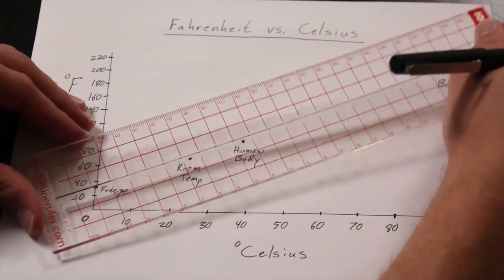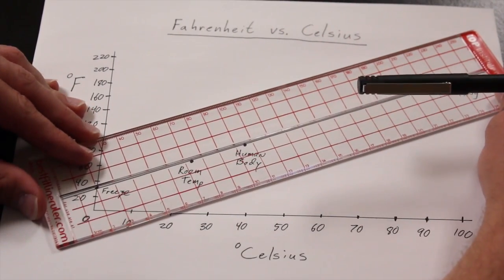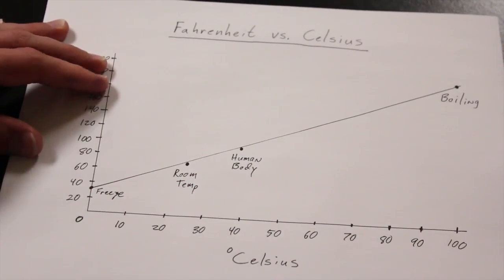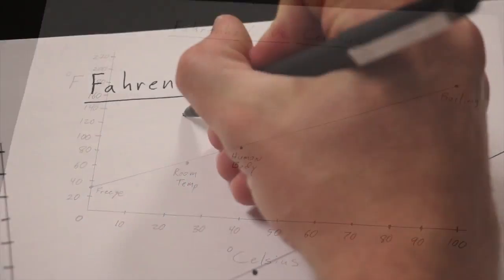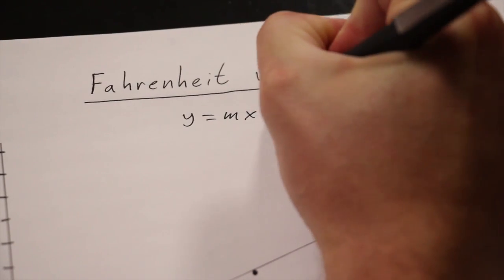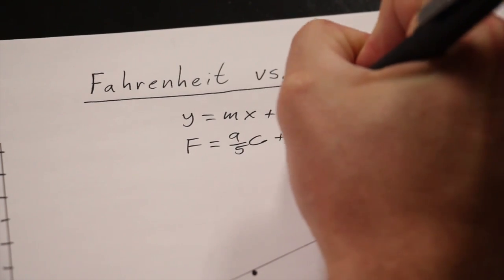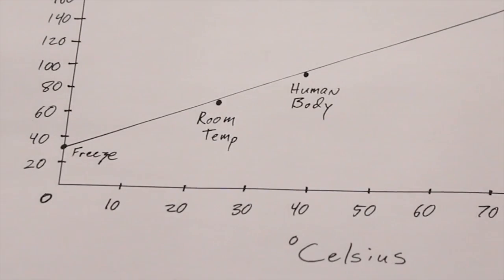However, this best-fit line will not be messed up, particularly when you use this tool. y equals mx plus b becomes Fahrenheit equals nine-fifths Celsius plus 32. The y-intercept.